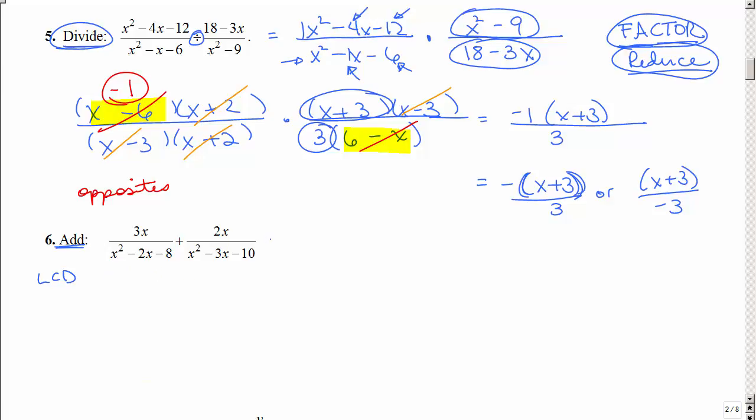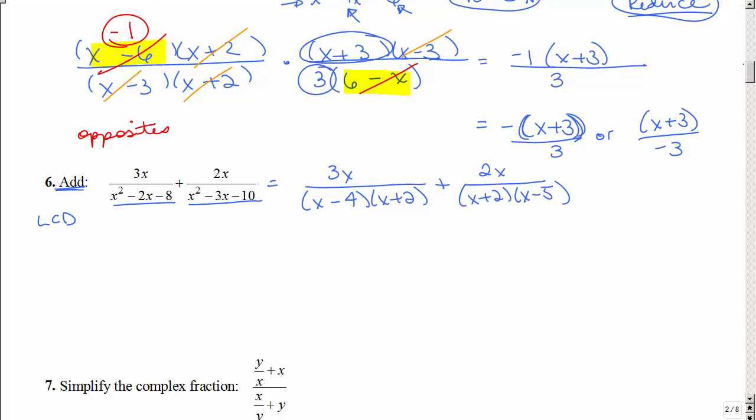I do that by factoring each of these denominators. So I'm going to factor that one, and I'm going to factor this one. So what would be the least common denominator? Well, it's one of every kind of factor. So I have an x minus 4, an x plus 2, and an x minus 5. No, I don't write down that x plus 2 twice. So I'm going to make it one long fraction, one big denominator. So that's my least common denominator.